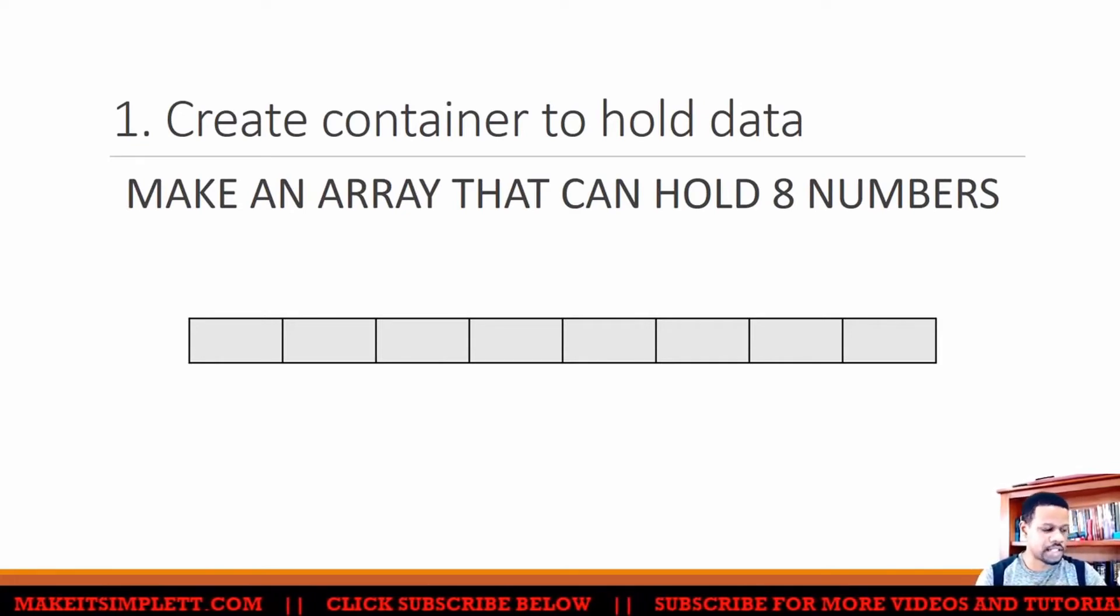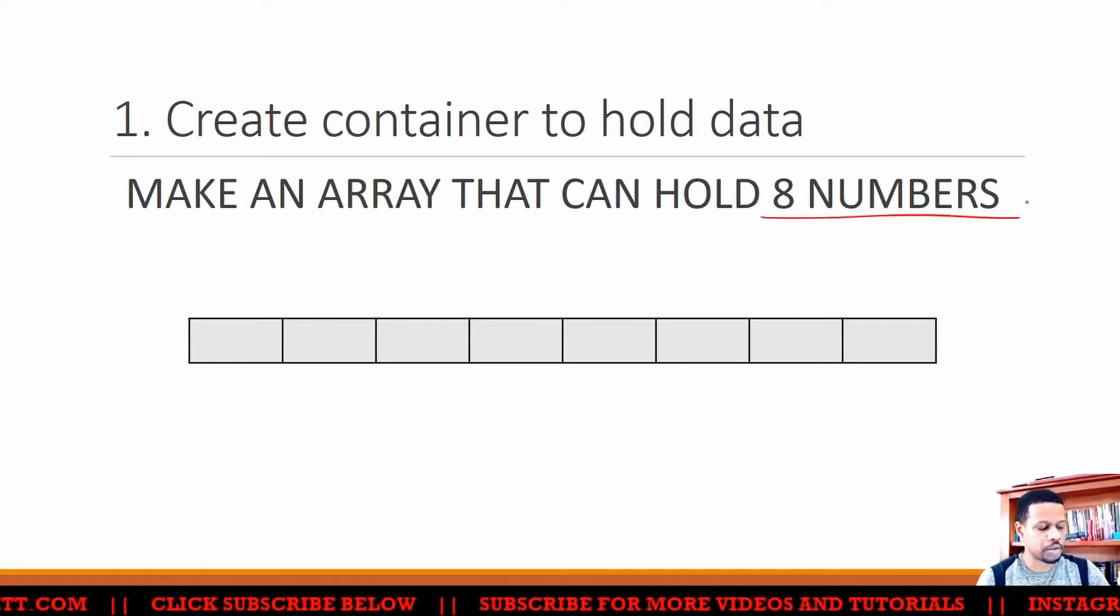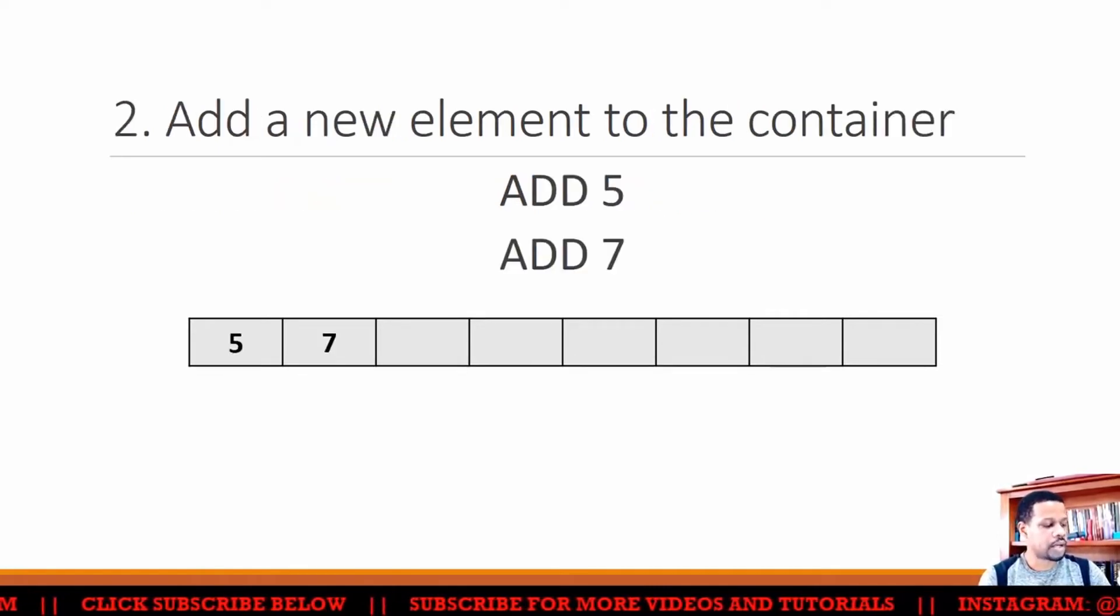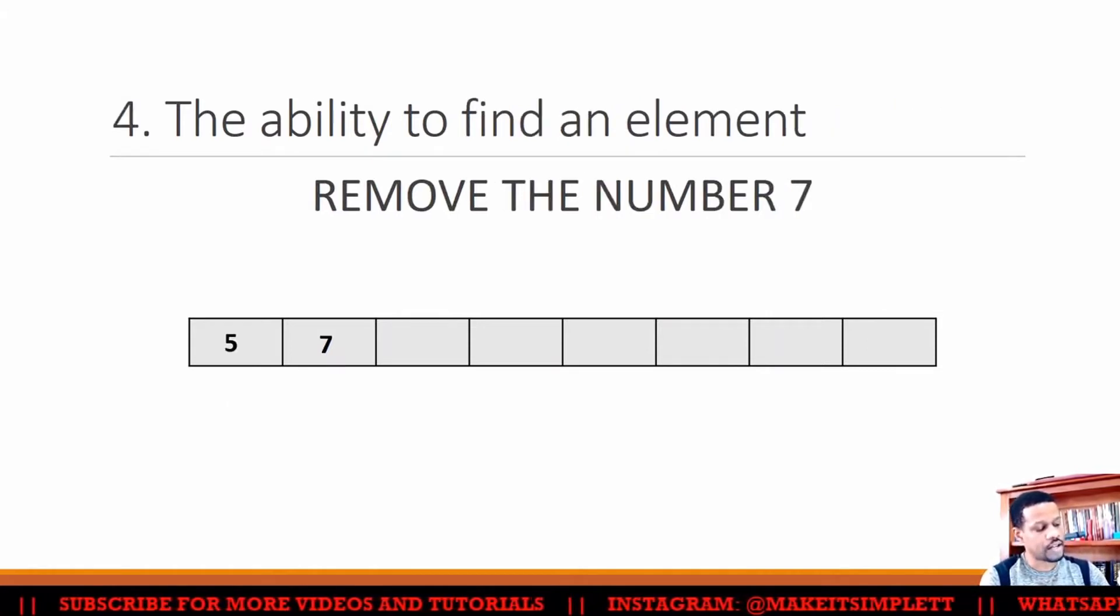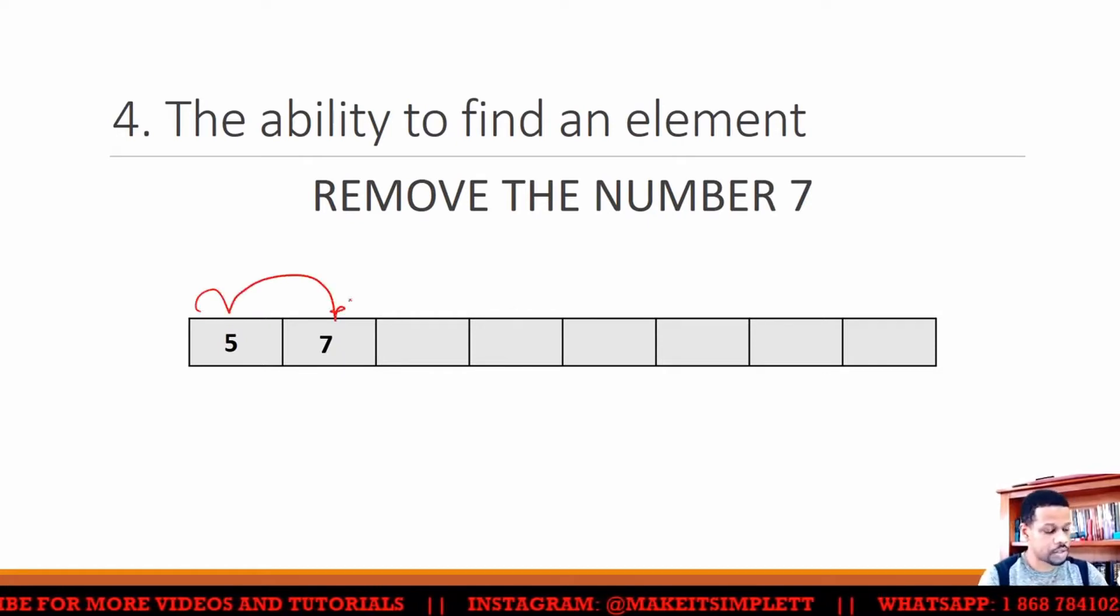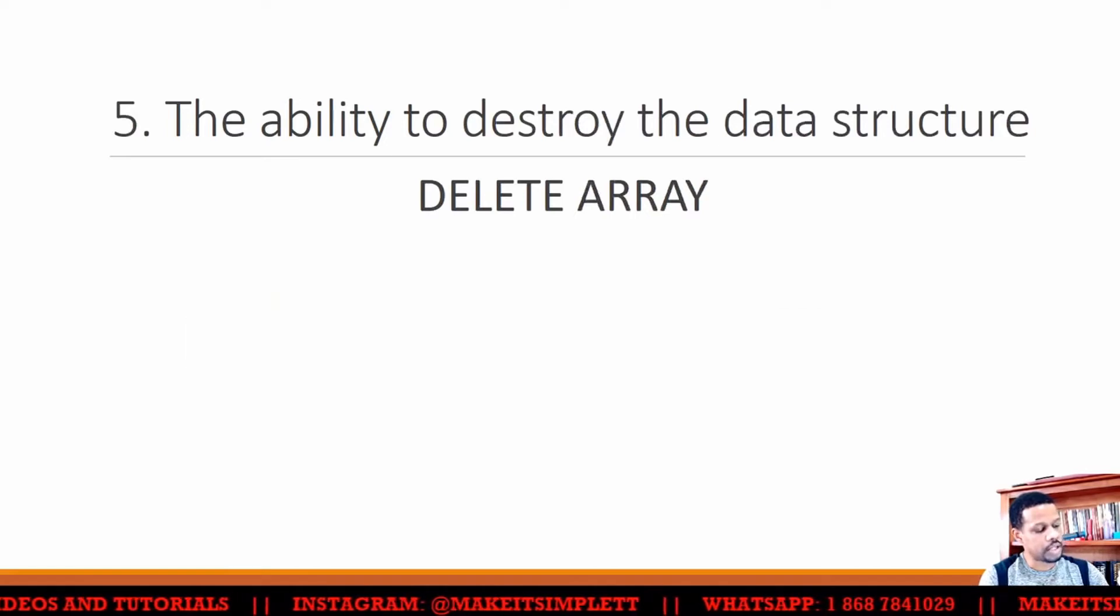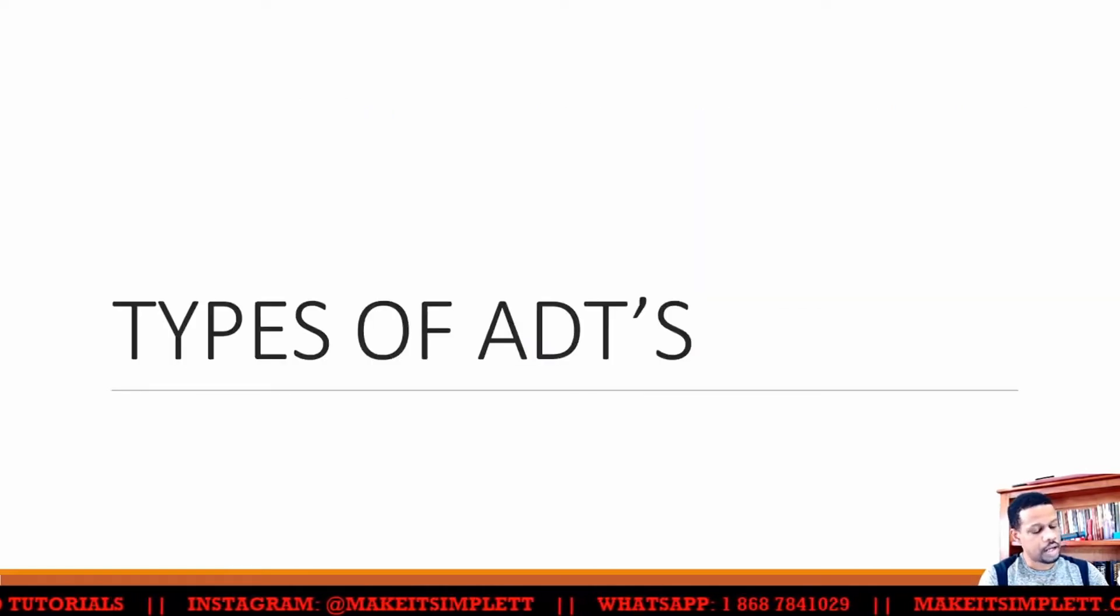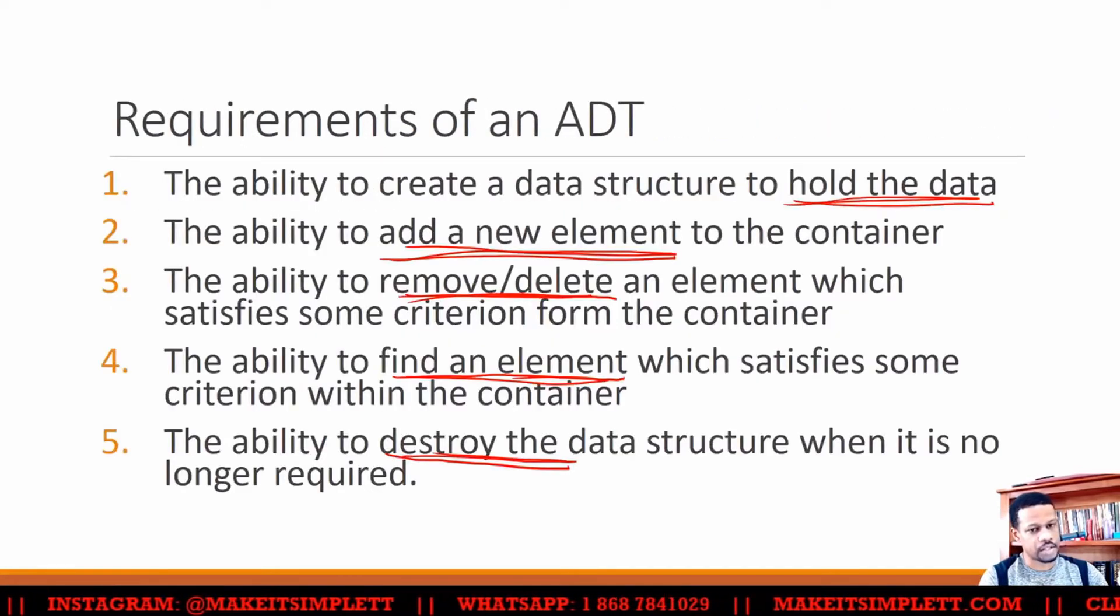Alright, so to create our data type, first we could create an array that could hold eight numbers. Then we could add a new element to the array, remove an element from the array, find an element which will be to search through the array to find whatever number we want, then delete the whole array and make it disappear. And those are basically the five things that an abstract data type should be able to do.